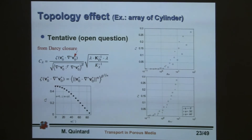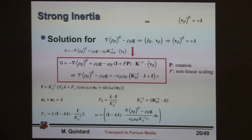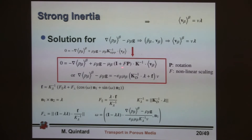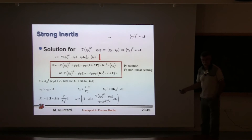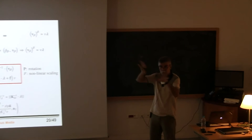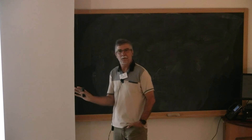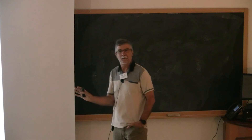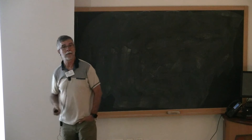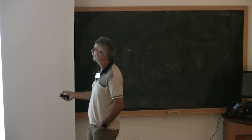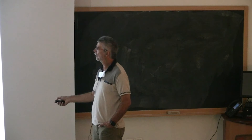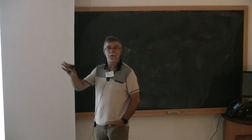Returning to the strong inertia generalized equation: if you have a random system, the rotation matrix tends to become unity. Calculating the creeping flow regime already gives an estimate of the importance of those terms. For a Poiseuil flow, the relevant term will be zero; for flow perpendicular to an array of cylinders, it won't be zero. This calculation gives an idea of the potential for different types of bifurcation in the system.